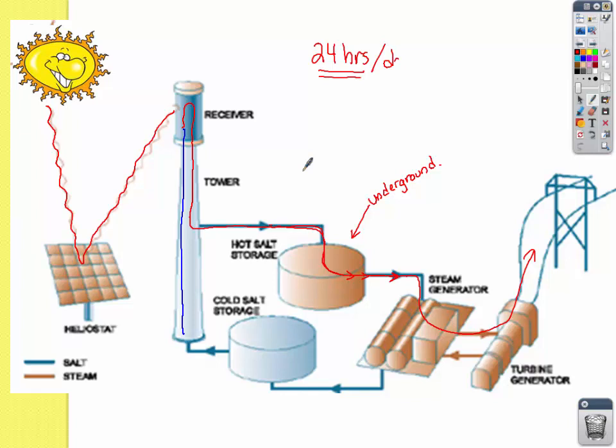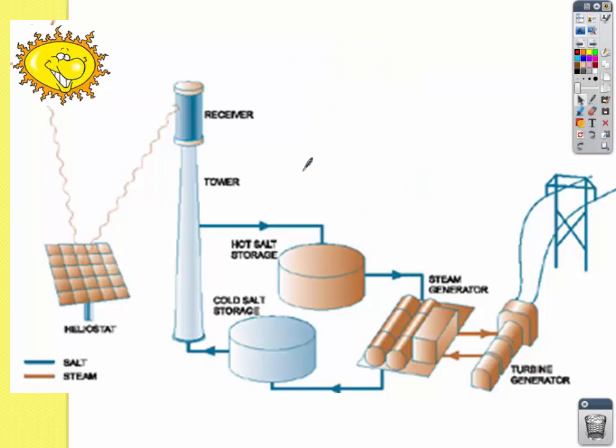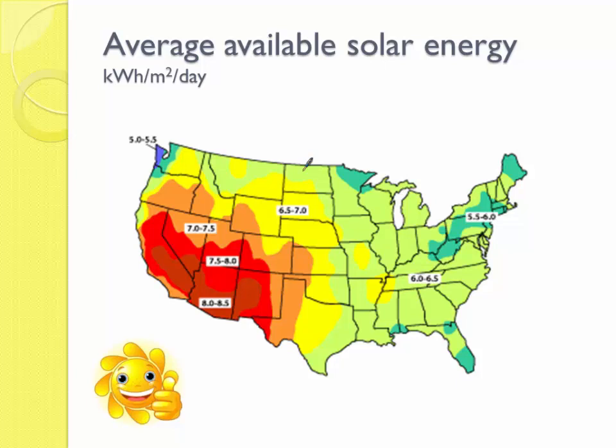There are other ways to get these things to work 24 hours a day. You can have a backup system that runs on wind energy or burns natural gas, so that you have a combined system — half the day generating electricity using the sun and the other half using natural gas or biofuels. You can combine renewable energy sources. However, it's only in the American Southwest that these options at the utility scale are actually viable. Where most people live on the East Coast, we don't have enough average available solar energy to make these things worthwhile.